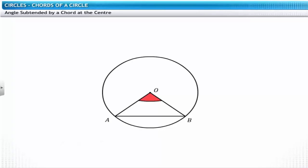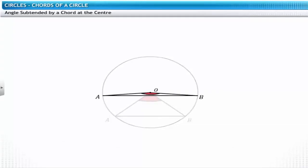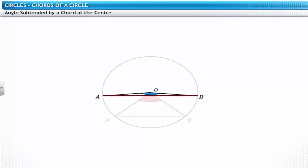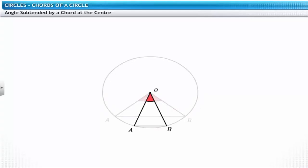Let us see how this angle changes if the positions of A and B change. As the chord AB moves closer to the center O, it increases in length, and the angle subtended by AB at O also increases. As the chord moves away from the center, its length and the angle subtended by it at the center decrease.